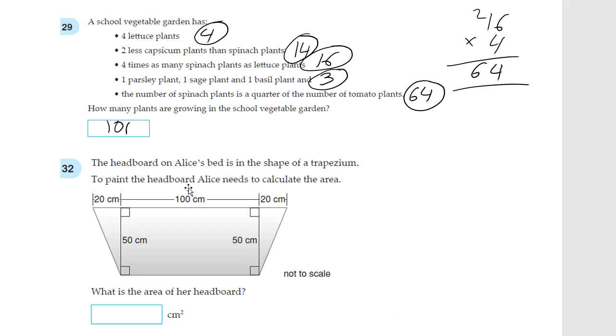And, the last question for this video. Question 32. The headboard on Alice's bed is in the shape of a trapezium. To paint the headboard, Alice needs to calculate the area. So, first of all, let's do the easy part. Let's do the area of the rectangle. So, length times width, 50 times 100, gives you 5,000 centimeters squared.